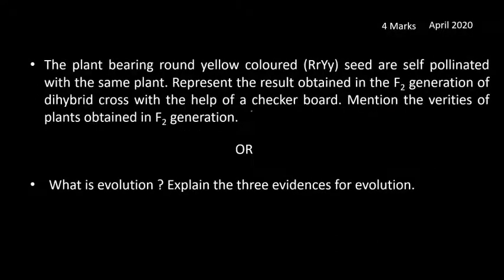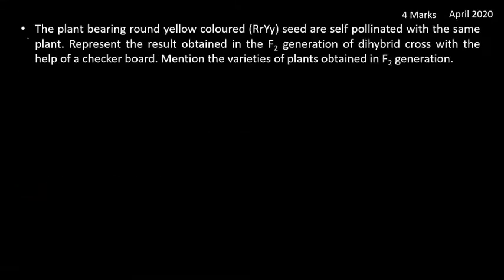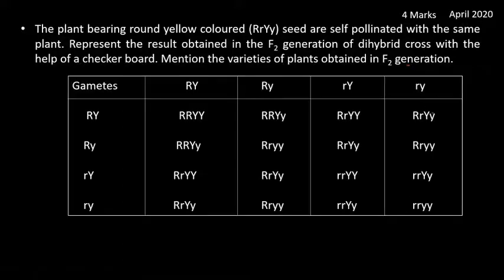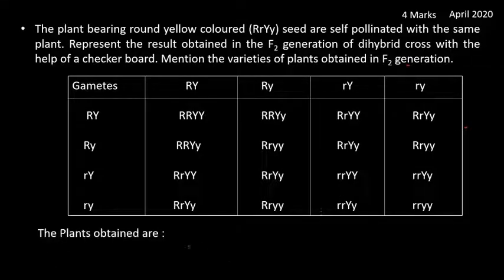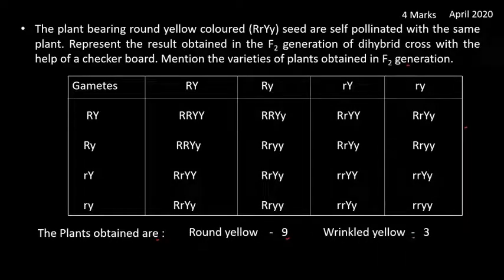Next question is for four marks — you have to answer any one of two questions. First: plants bearing round yellow colored seeds are self-pollinated. Represent the result obtained in the F2 generation of the dihybrid cross with the help of a checker board, and mention the varieties of plants obtained. The varieties of plants obtained in F2 generation are: round yellow — 9, wrinkled yellow — 3, round green — 3, and wrinkled green — 1.